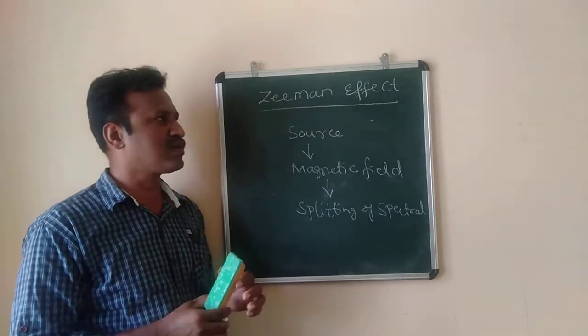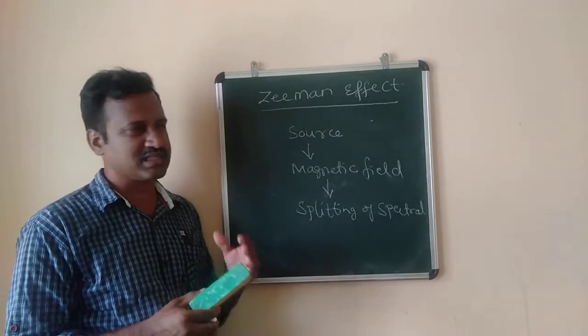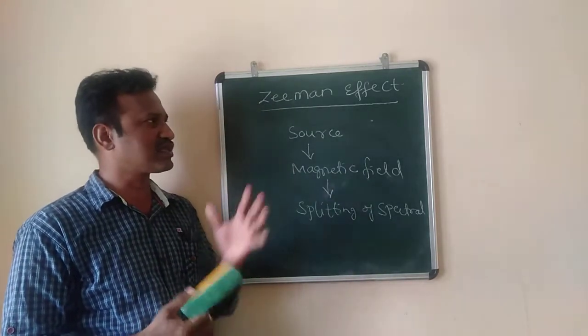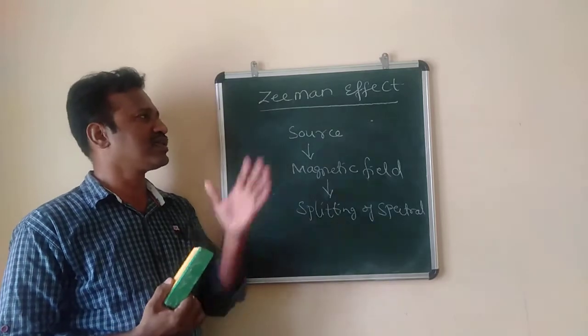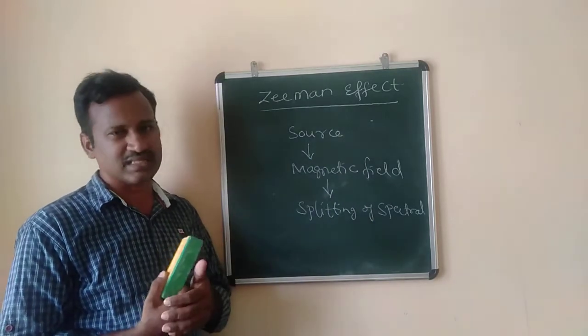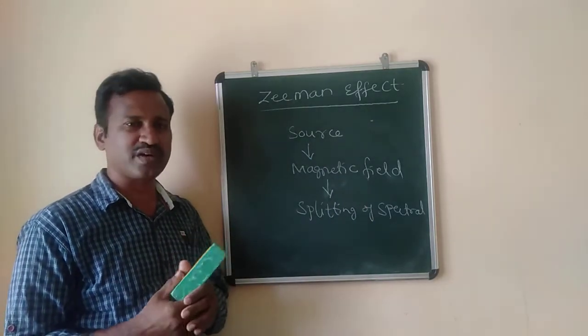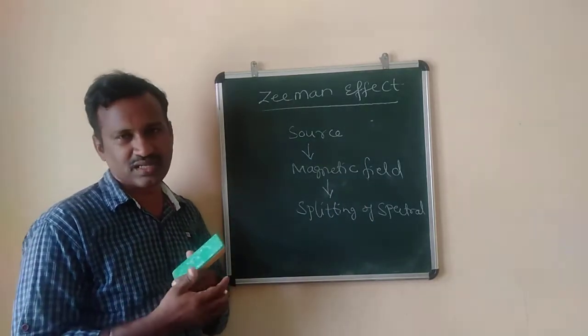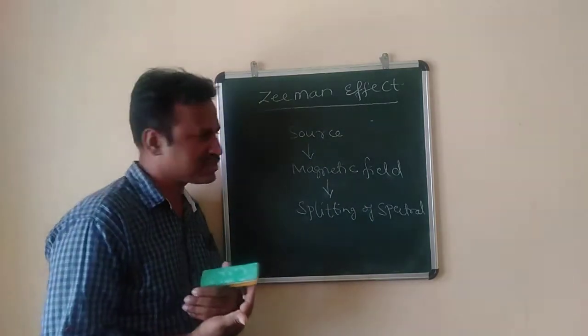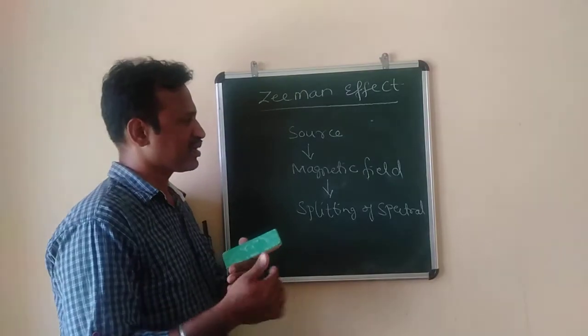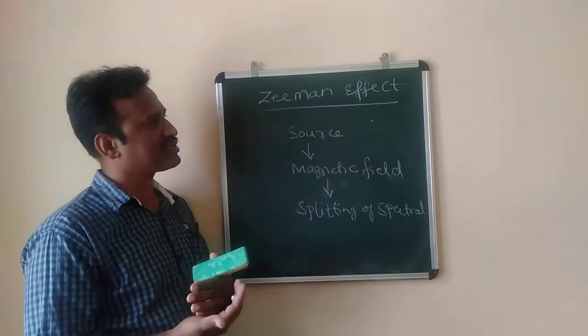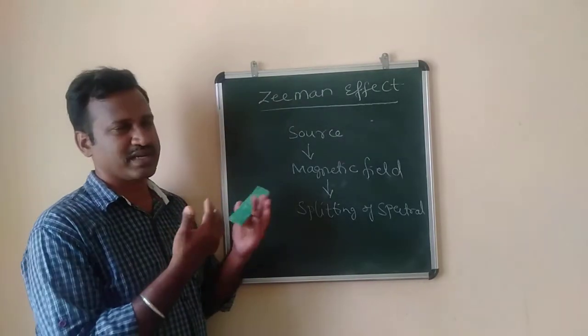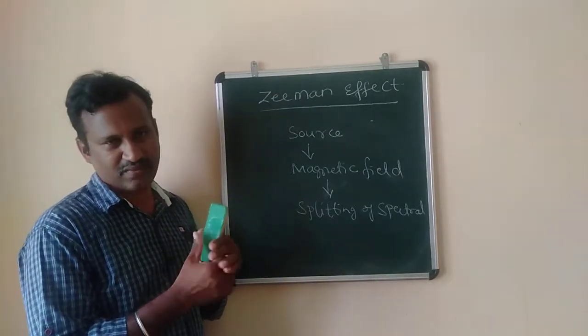In order to explain this failure of Bohr's atomic model — that is, to explain the Zeeman effect — we are going to consider the quantum conditions. By including the quantum conditions, we are going to explain the Zeeman effect.